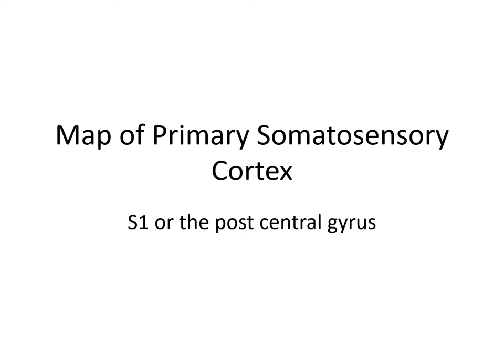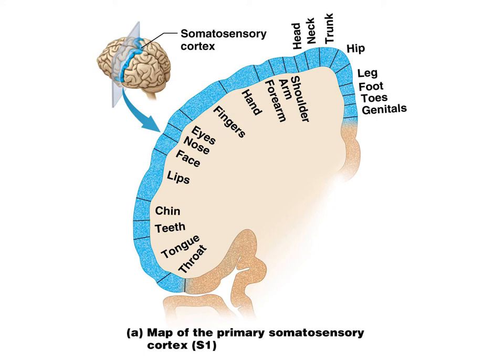Now let's look at the map of the primary somatosensory cortex. Remember, it is located in the postcentral gyrus, just immediately posterior to the central sulcus, and is also called S1. Here's a map of the somatosensory cortex where they've mapped which region of the body corresponds to which area of the cerebral cortex — including throat, tongue, teeth, chin, lips, face, nose, eyes, fingers, hands, forearm, shoulder, head, neck, trunk, hip, leg, foot, toes, and genitals. Some regions are much larger than others, indicating areas with greater sensory discrimination.